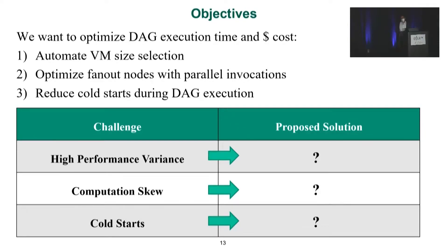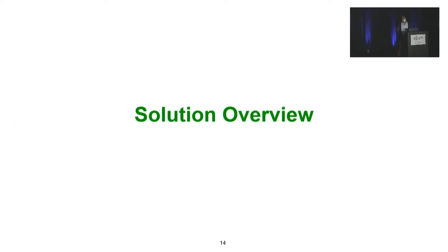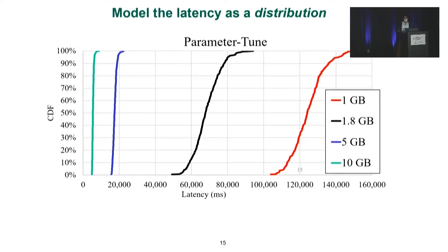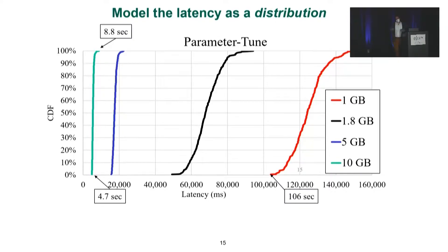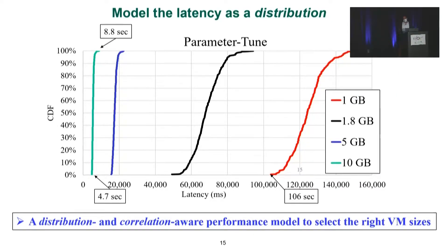We have identified three major challenges from the workload characterization: high performance variance, computation skew, and cold starts. Our first solution is to model latency as a distribution. Here I'm showing four different CDFs for the same function with respect to different VM sizes — the CDF on the y-axis and latency on the x-axis. Increasing the VM size reduces the latency, shifting the distribution to a lower latency. However, even with the maximum VM size in AWS Lambda at 10 gigabytes, there is still a large gap between the minimum and maximum latency, so we need a distribution and correlation-aware performance model to select the right VM size.